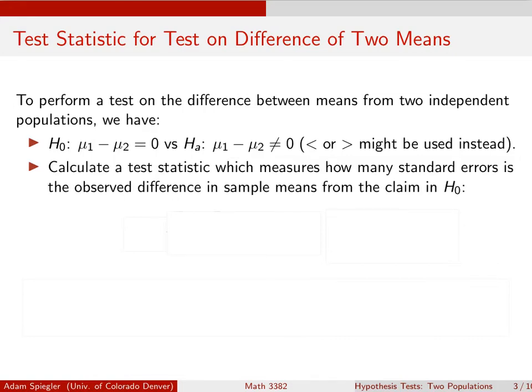We use them to calculate what's called our test statistic. Recall that the test statistic measures how many standard errors is the observed statistic from the claim in the null hypothesis. So what that would look like is from my sample, I calculate the mean from population one, x̄₁, and the mean from population two. So this is my observed difference.